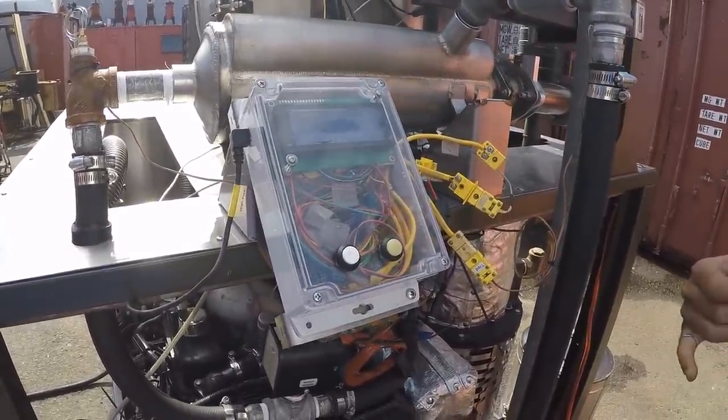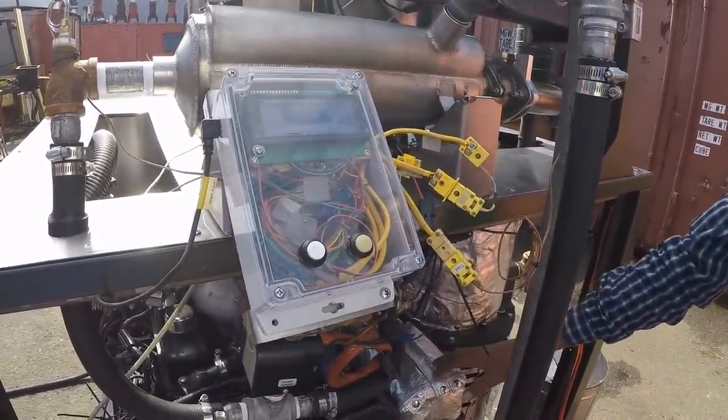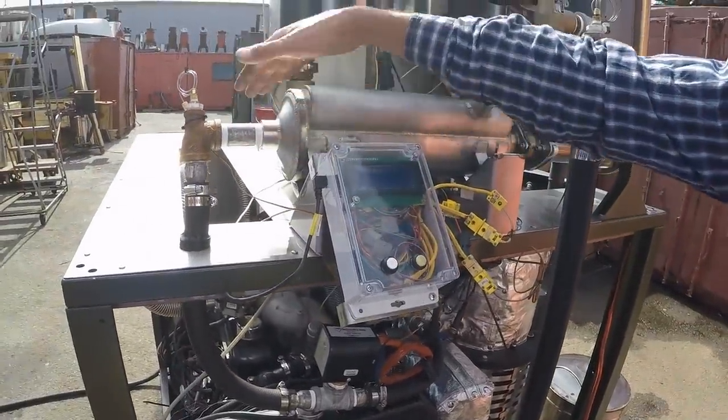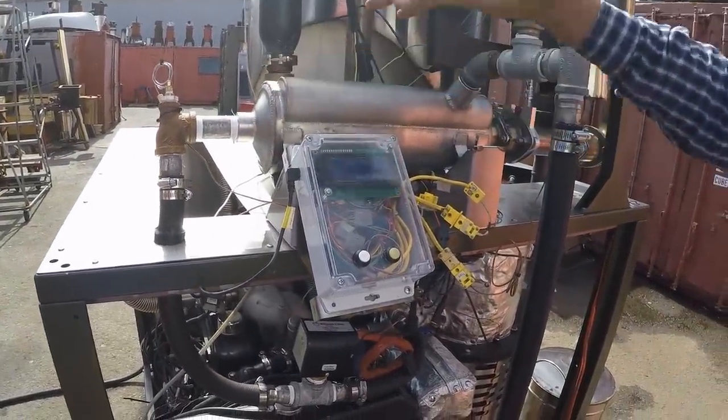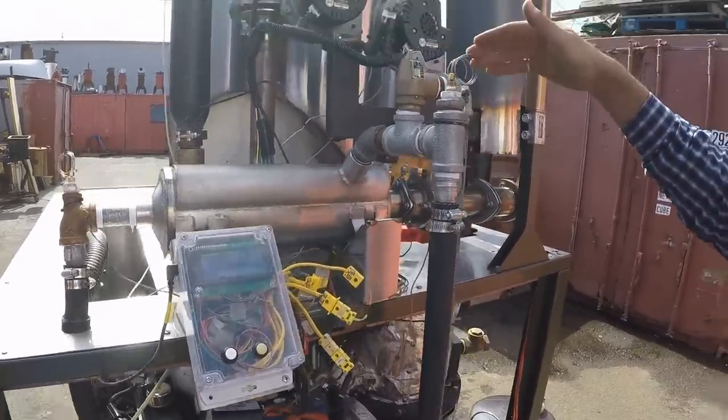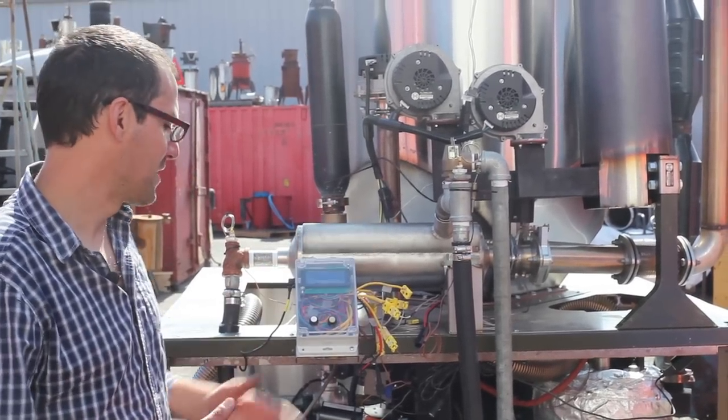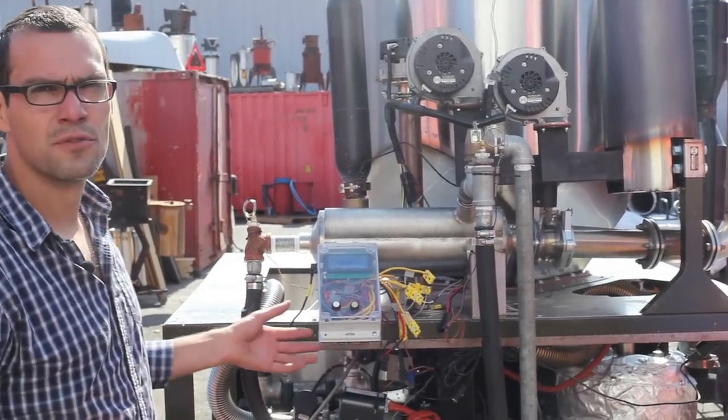We're measuring the water temperature into the plate heat exchanger. We measure the water right before it goes into the shell and tube heat exchanger, and then we measure the water temperature coming out of the shell and tube heat exchanger. We're also measuring the exhaust gas temperature and the engine coolant water temperature.